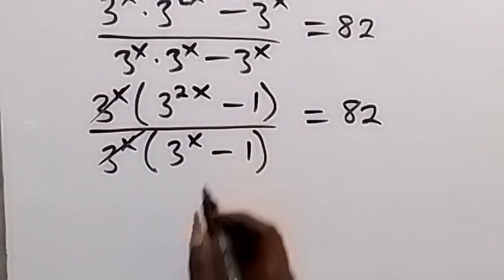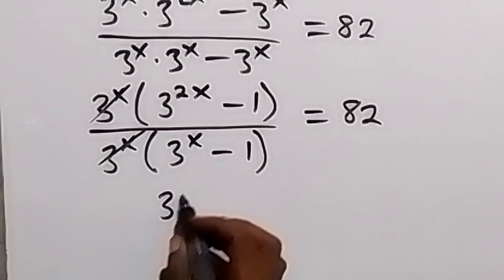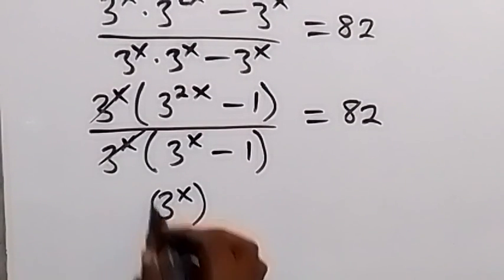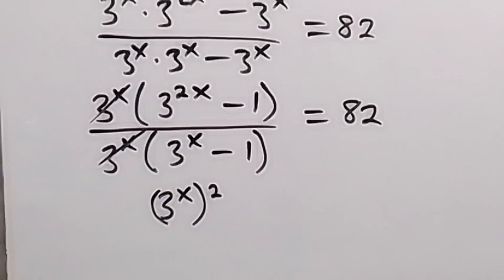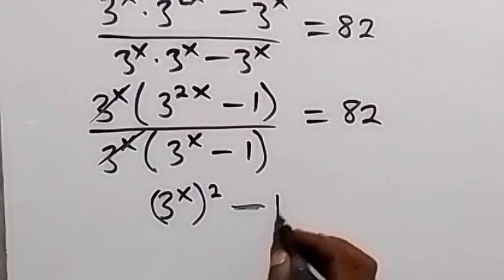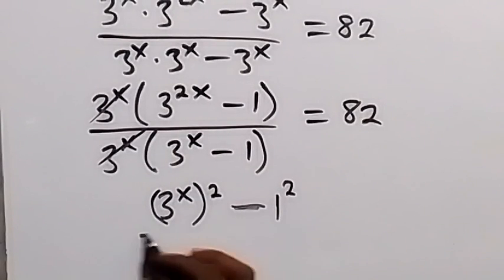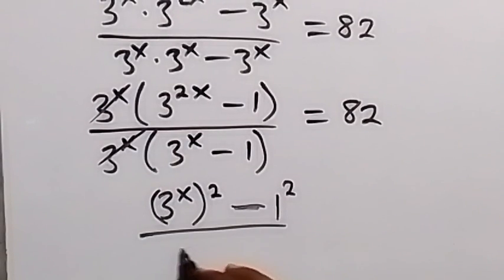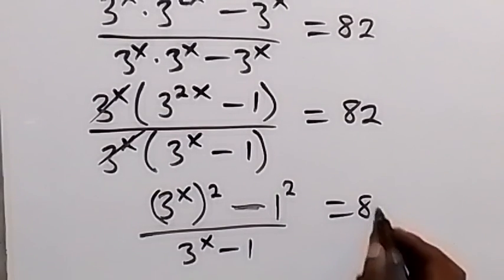Once we cancel, what we have left here we can write as 3 raised to the power x squared, which is the same thing as 3 raised to the power 2x, then minus 1. And minus 1 here can also be written as 1 squared. Then divided by 3 raised to the power x minus 1, which is equal to 82.